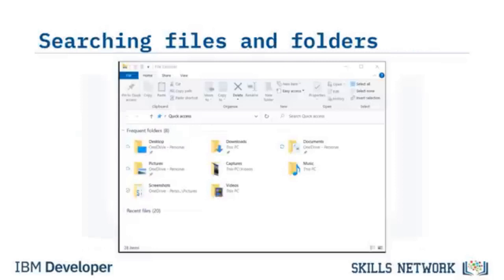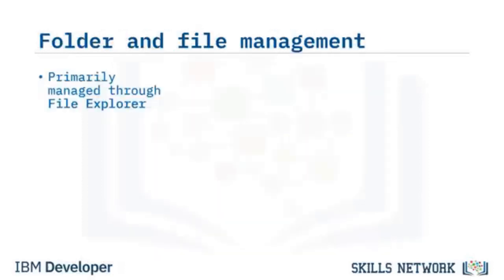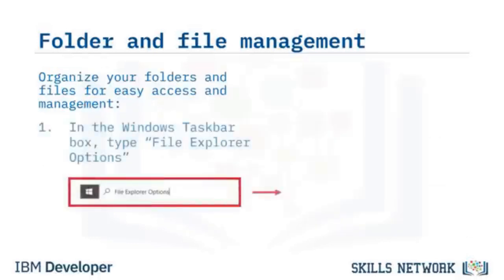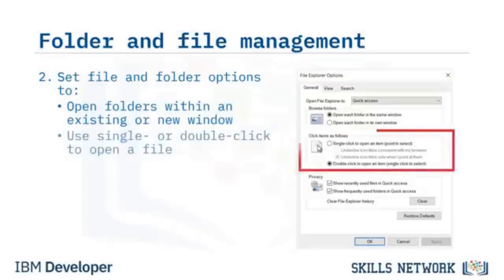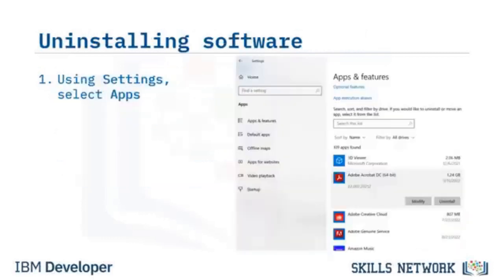With the rules set, open File Explorer to search files and folders. The ribbon bar displays commands to perform tasks such as opening, editing, copying, moving, and deleting files. In the Windows taskbar, type 'File Explorer options' to open File Explorer, where you can set file and folder options: to open folders within an existing or new window, to use single-click or double-click to open a file, and to display recently accessed files and folders. If a program is not needed or not permitted, you can select Settings, then Apps, locate the program in Apps and Features, and right-click to select Uninstall.